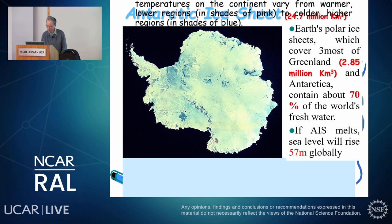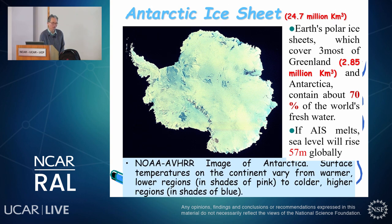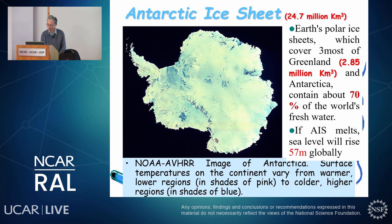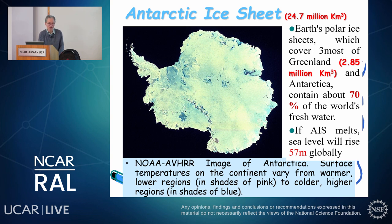About 70% of fresh water is frozen in polar ice caps. The Antarctic ice sheet has a volume of almost 25 million cubic kilometers. Even though it's melting quite seriously in recent years, it still holds the most fresh water in the world — but it's frozen and we cannot use it. Greenland also has about 2.85 million cubic kilometers of ice. Together these two ice sheets contain about 70% of the world's fresh water. If they melted completely, global sea level would rise about 57 meters.